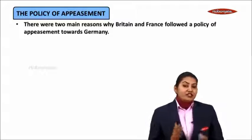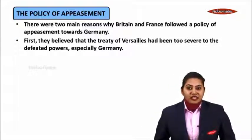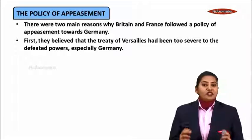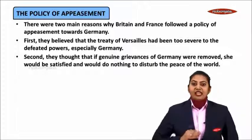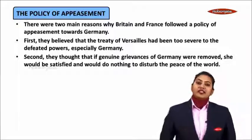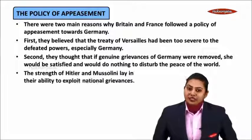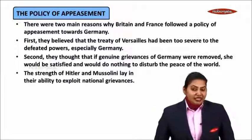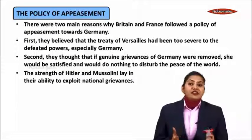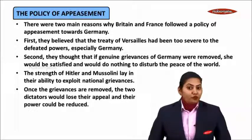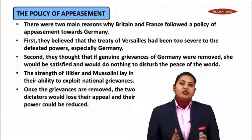There are two main reasons as to why Britain and France followed a policy of appeasement towards Hitler. First, they believed that the Treaty of Versailles had been too severe for the defeated powers, especially Germany. Second, they thought that if genuine grievances of Germany were removed, she would be satisfied and would do nothing to disturb the peace of the world. They also felt that the strength of Hitler and Mussolini lay in their ability to exploit the national grievances in their respective countries. Once these grievances are removed, the two dictators would lose their appeal and their power could be reduced.